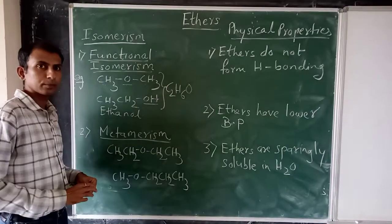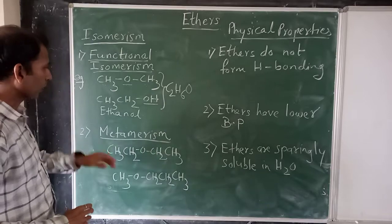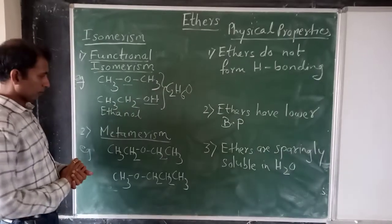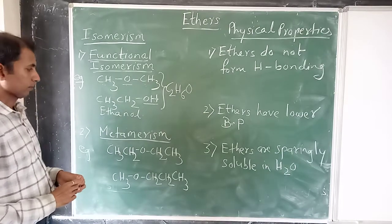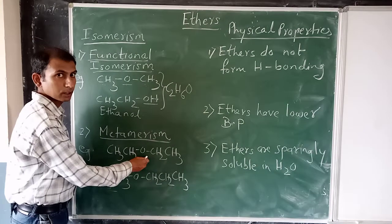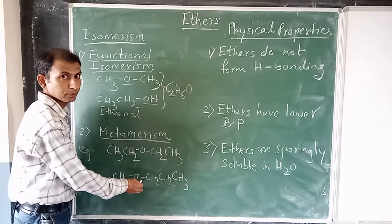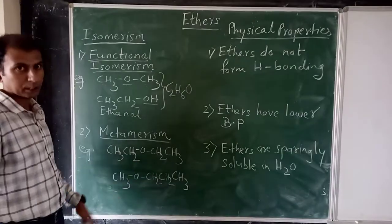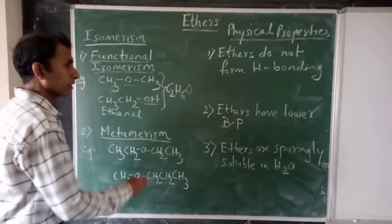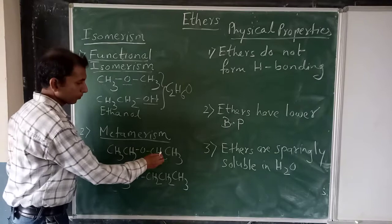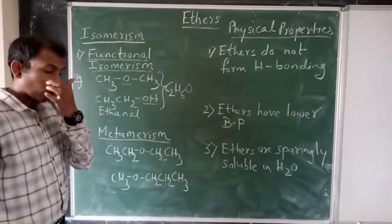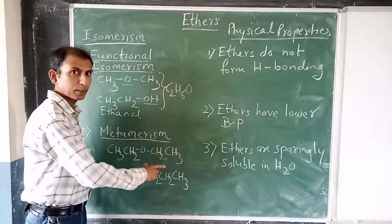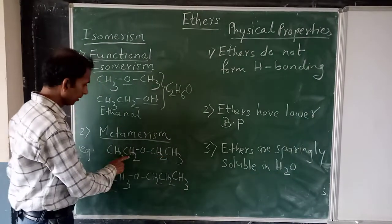The second type of isomerism is Metamerism. Let us look at this example. Here we have the first ether structure and the second ether structure. The functional group is the same - oxygen. But what is the difference? In the first structure, on both sides of the oxygen atom, we have ethyl groups: CH2CH3 and CH2CH3.